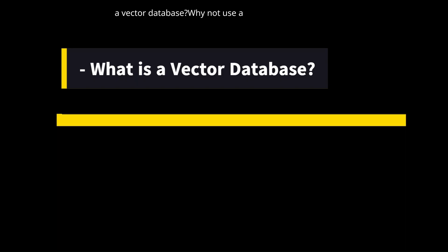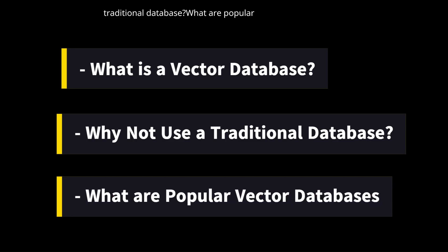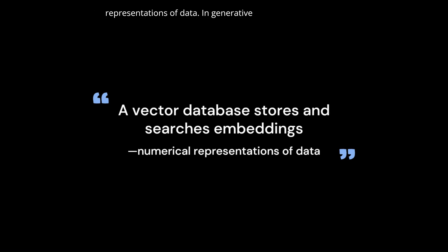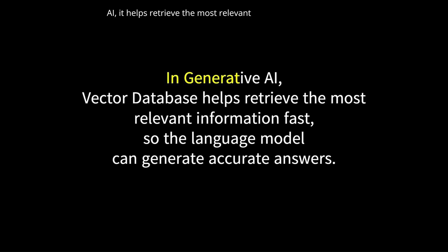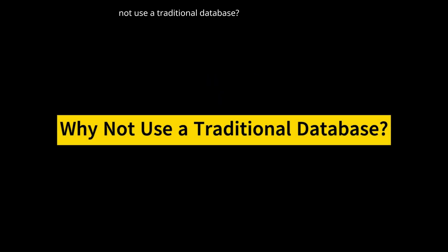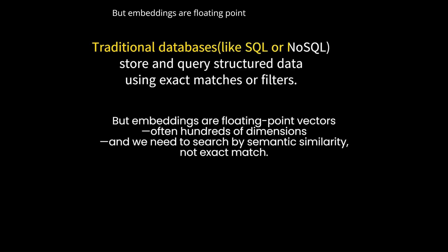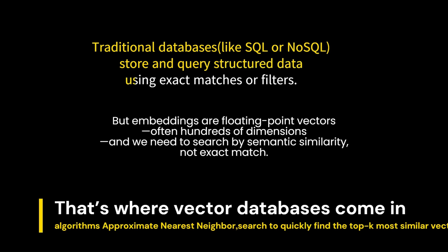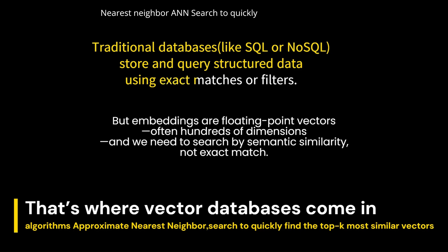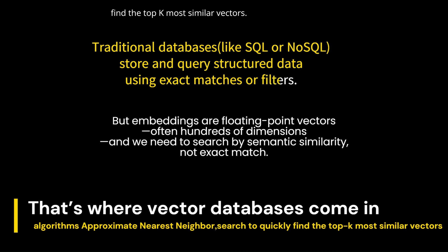The next topic is: what is a vector database, why not use a traditional database, and what are popular vector databases? A vector database stores and searches embeddings — numerical representations of data. In generative AI, it helps retrieve the most relevant information fast, so the language model can generate accurate answers. Traditional databases like SQL or NoSQL store and query structured data using exact matches or filters. But embeddings are floating-point vectors, often hundreds of dimensions, and we need to search by semantic similarity, not exact match. That's where vector databases come in — they use algorithms like Approximate Nearest Neighbor (ANN) search to quickly find the top-K most similar vectors.